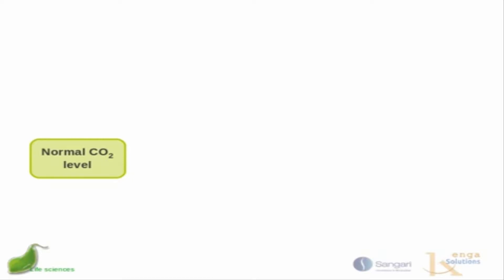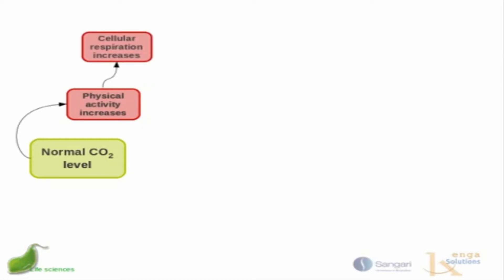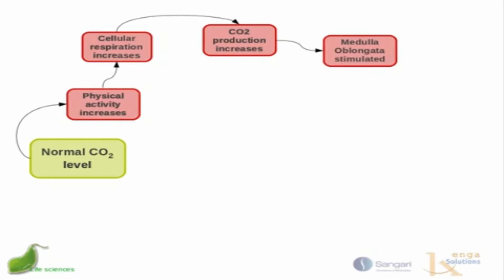This is really about homeostasis, not just the physiology of respiration. If we imagine normal carbon dioxide levels in the blood, then we do some physical activity — cellular respiration increases, and as a consequence we produce more carbon dioxide, because carbon dioxide is a byproduct of cellular respiration. The detector — the equivalent of the thermostat in our air conditioner — is the medulla oblongata, which becomes stimulated.